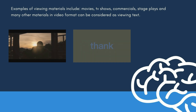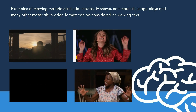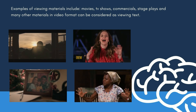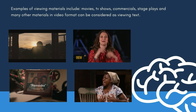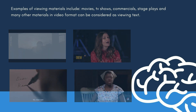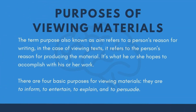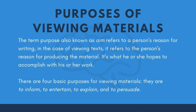Examples of viewing materials include movies, TV shows, commercials, stage plays, and many other materials in video format can be considered as viewing text. Now that we've got the idea of viewing text out of the way, let's go straight to the purposes.